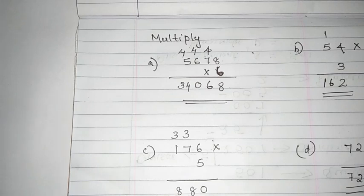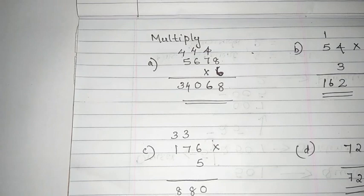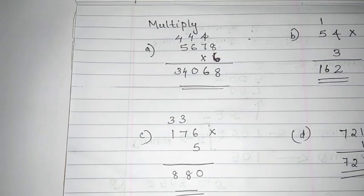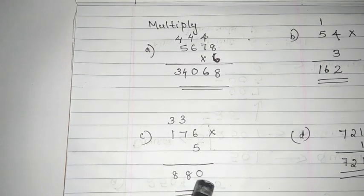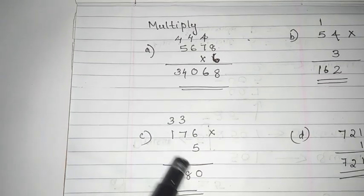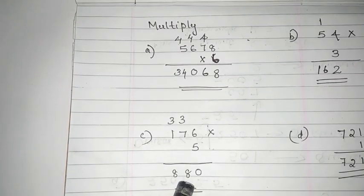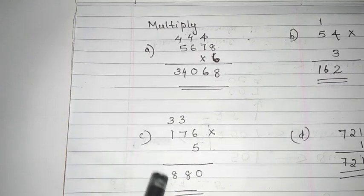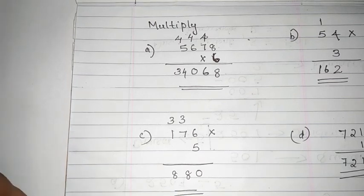One more example we can do here. 176 into 5. First, we will multiply unit digit 6. 6 into 5, 30. 30 means 3, 0. 0 is the unit digit. 0 here, 3 balance. Then 7 into 5, 35 plus 3, 38. 38, 8 here, 3 here. Then 1, 5 is 5 plus 3. This is the way we used to multiply the numbers. You know it very well.